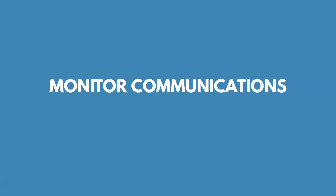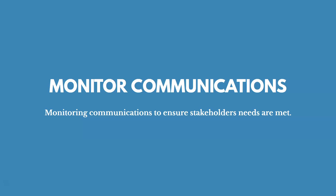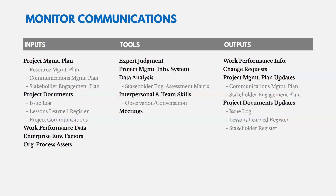Now let's talk about Monitor Communications — monitoring communications to ensure stakeholder information needs are met. Stakeholders will see your messages, reports, and communications and may want to propose adjustments, which is normal. Like most monitoring and controlling processes, work performance data comes in and work performance information goes out, along with change requests — because if things aren't going as planned and you need to make adjustments, you may need to submit a change request. Key project documents going in include your communications management plan and your project communications. You compare the communications management plan — what you planned to communicate, to whom, and when — against the actual project communications that were sent.